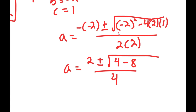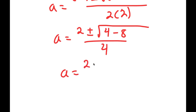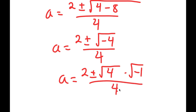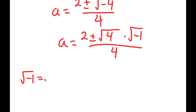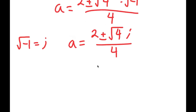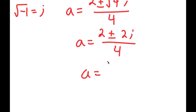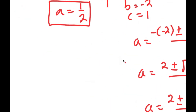This is equal to 2 plus or minus the square root of negative 4 over 4. Now, the square root of negative 4 can be rewritten as the square root of 4 times the square root of negative 1. The square root of negative 1 is equal to the imaginary number i. So I get a equals 2 plus or minus the square root of 4 times i over 4. The square root of 4 is 2, so a equals 2 plus or minus 2i over 4, which simplifies to a equals 1 plus or minus i over 2. These are two more solutions.